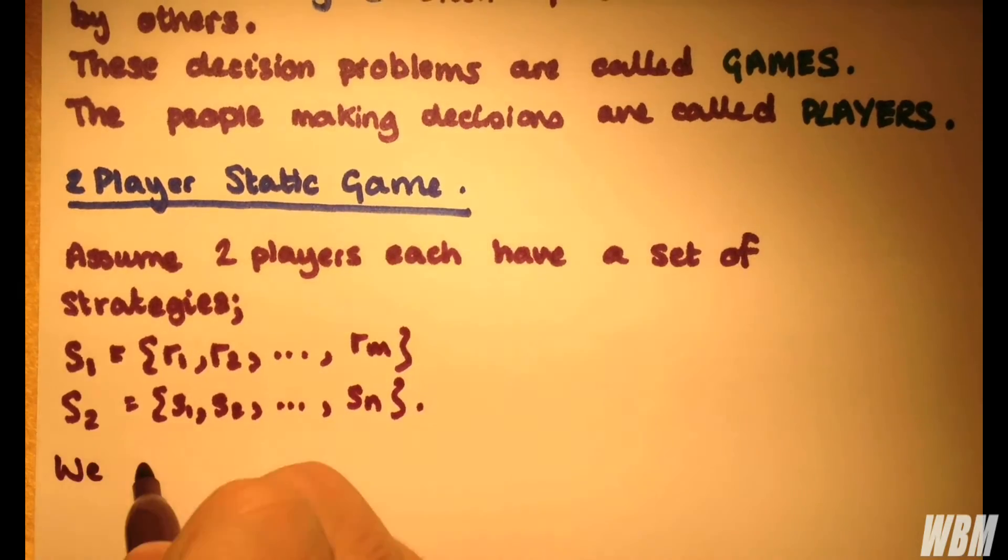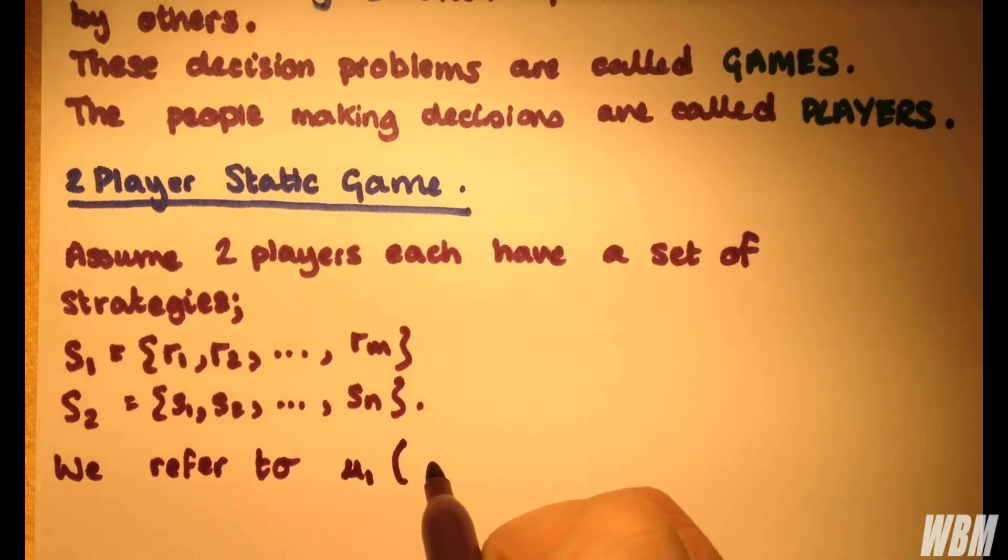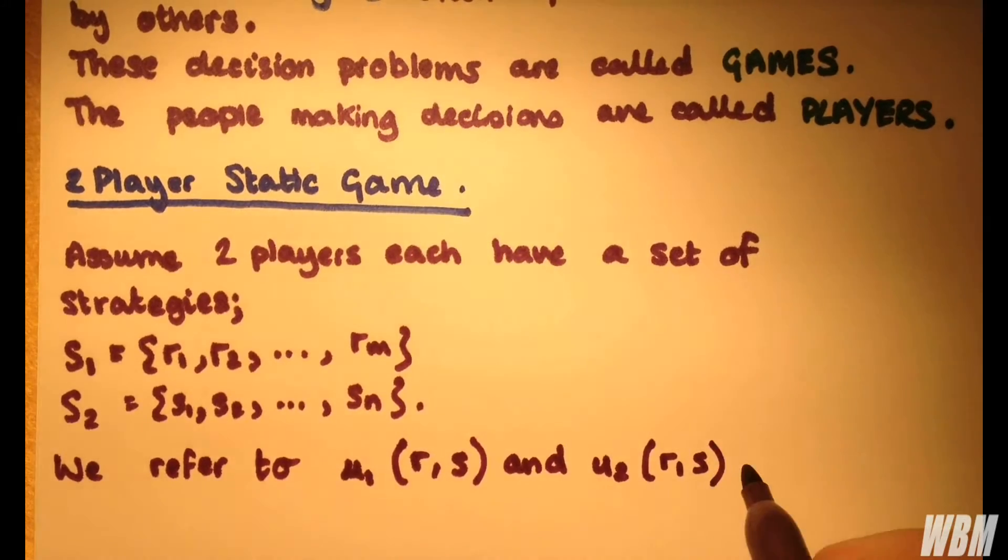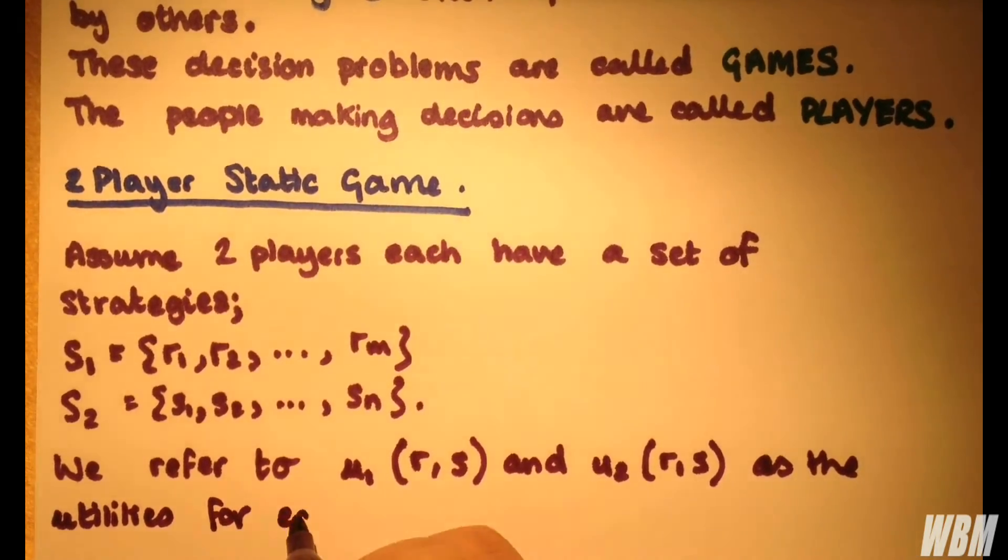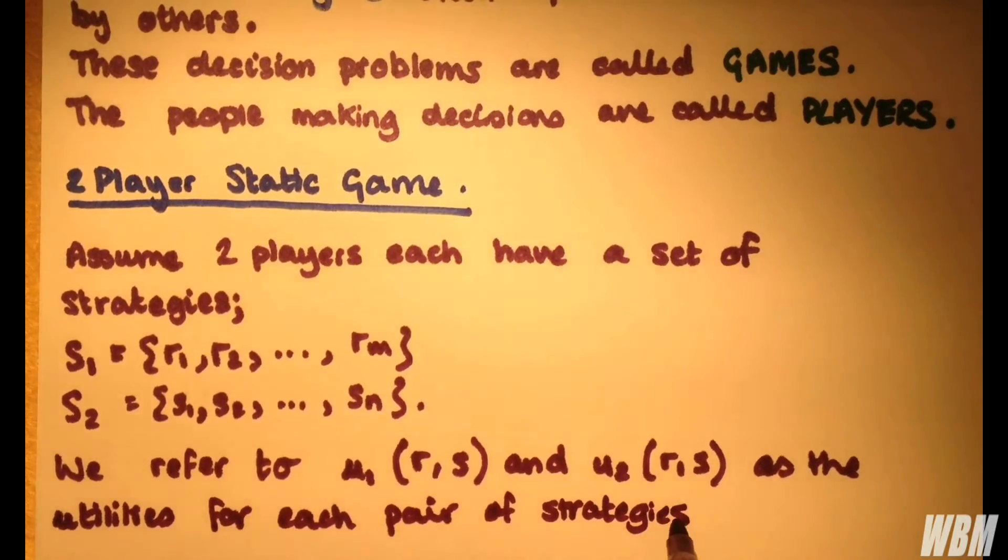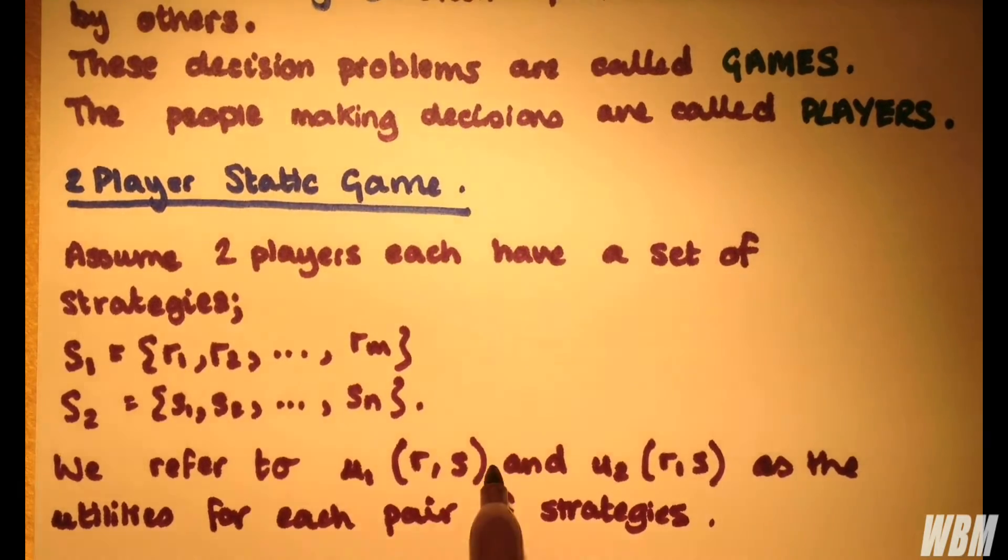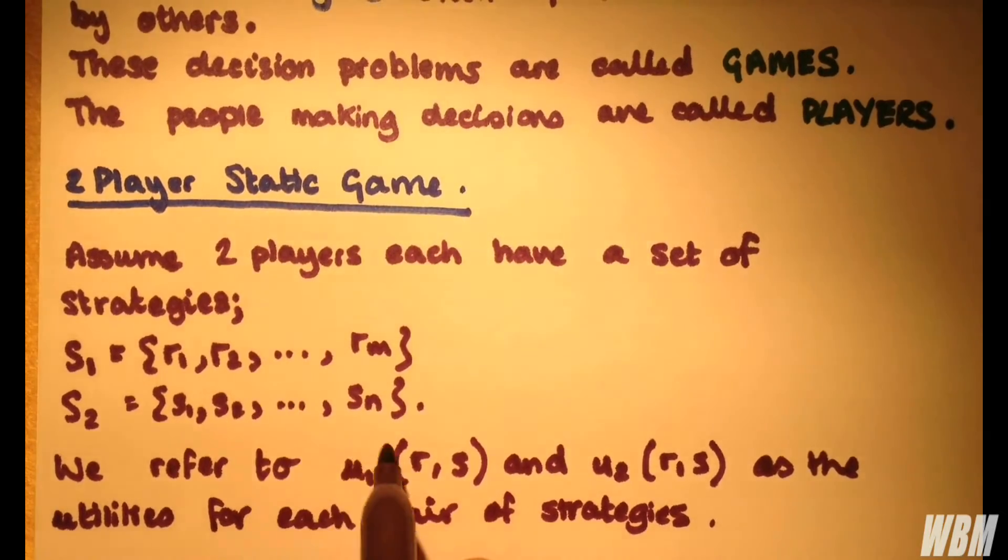We refer to U1(R,S) and U2(R,S) as the utilities for each pair of strategies. All this means is that for every different strategy that player 1 and player 2 chooses, there's going to be a different outcome. These outcomes will depend on the pairing that's chosen, so R1 and S7, for example, will give a certain utility.